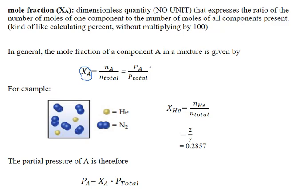The pressures will also be in the same ratio, so you could also determine the mole fraction by taking the individual partial pressure of gas A and dividing that by the total pressure. From that we can find the individual partial pressure by taking the mole fraction and multiplying by the total pressure.